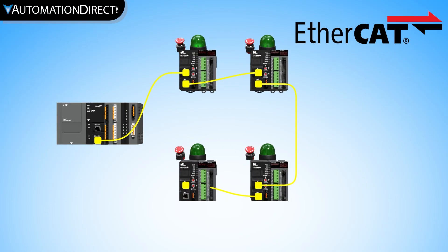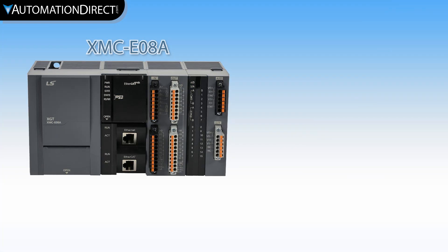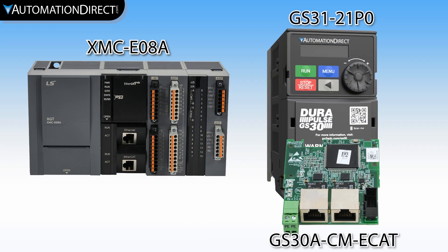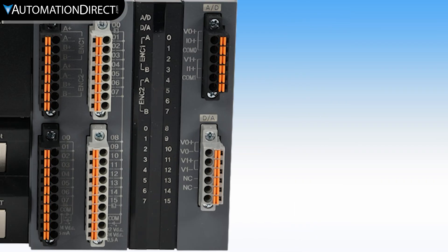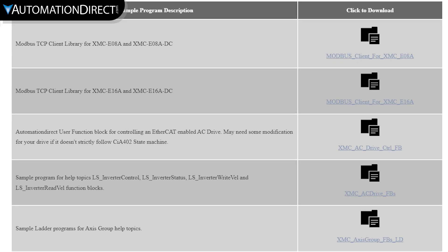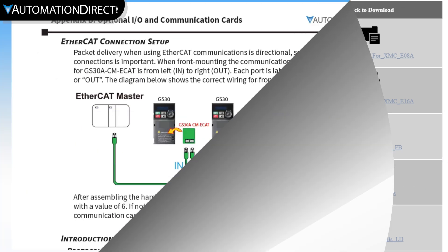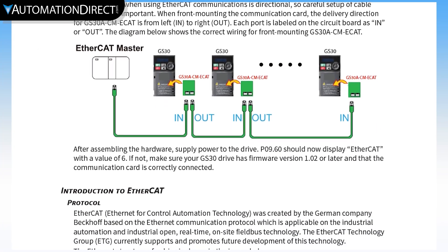EtherCAT is often used for motion and other time-critical communications because of its speed and reliability. For an overview of EtherCAT, please see the video linked above. For this demo, I'm using an LS Electric XMC PLC as an EtherCAT master with a DuraPulse GS30 as a node. The program is a simple sample program that can be downloaded from our site. I won't spend much time on the program to focus on the drive. Let's start with a quick look at EtherCAT data.